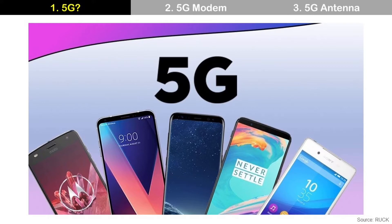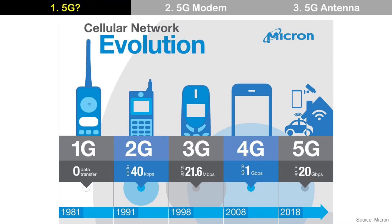You probably heard about 4G as well. 1G, 2G, 3G, 4G, 5G — these are generations of cellular network technology over time. G means generation, and a higher number means more advanced technology.